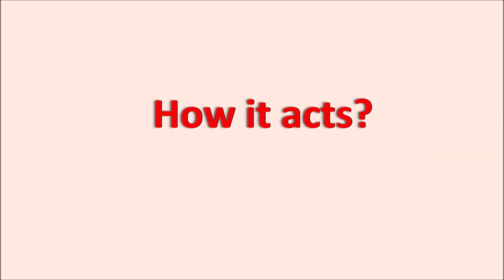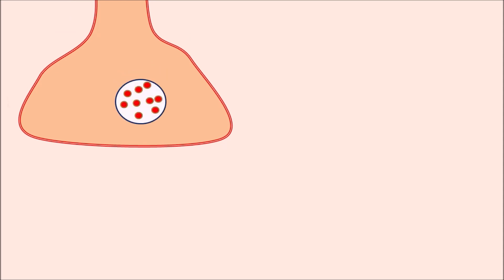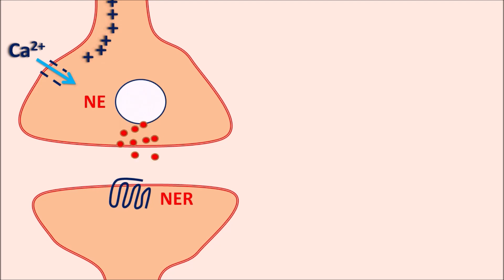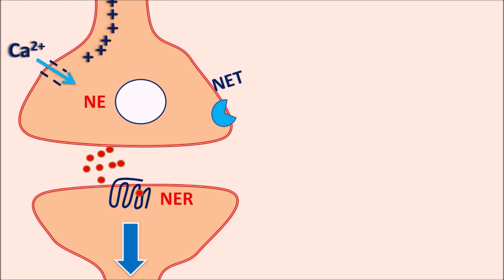Now let us see how this drug acts. Within the central nervous system, norepinephrine is an important mediator that can be released and act on post-synaptic neurons. At the post-synaptic neurons, adrenergic receptors such as alpha or beta receptors are present. Norepinephrine is released by calcium-mediated exocytosis — when the action potential reaches the pre-synaptic neuron, calcium enters and produces exocytosis and release of norepinephrine. This norepinephrine binds to norepinephrine receptors resulting in post-synaptic stimulation. The action of norepinephrine is controlled by its reuptake into the nerve terminal through a transporter called NET — norepinephrine transporter. Through this transporter, norepinephrine is taken back into the nerve terminals.